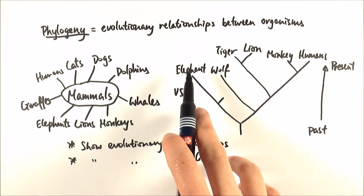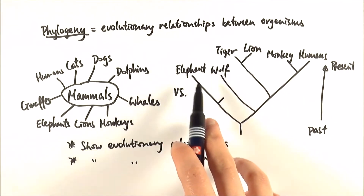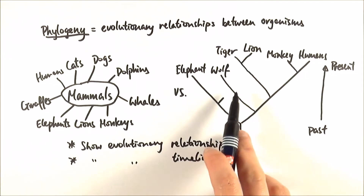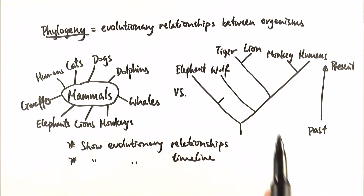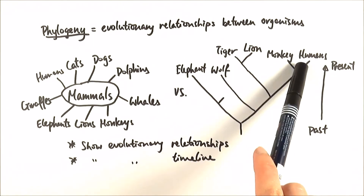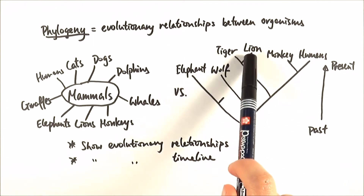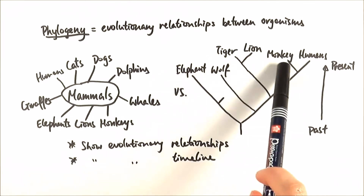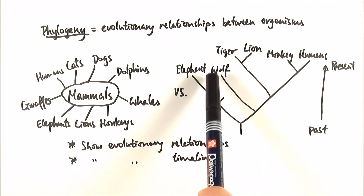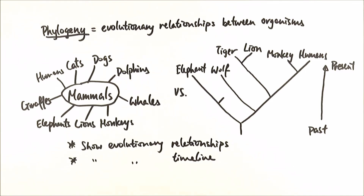Here you can see they are related — elephants are kind of descendants of the mammoths in that sense. They are all mammals, but some mammals are more closely related to each other than to the rest. This is what's so good about using a phylogenetic tree.